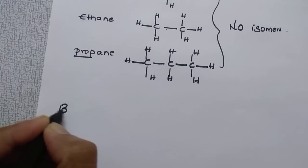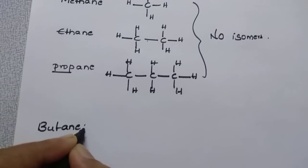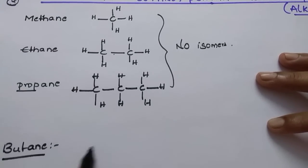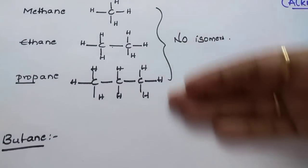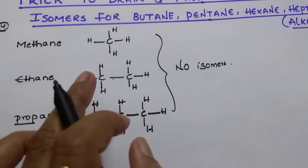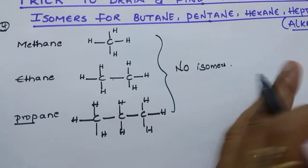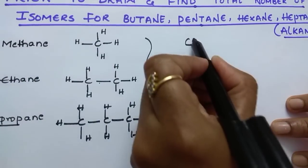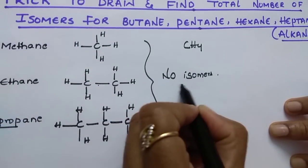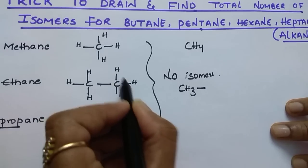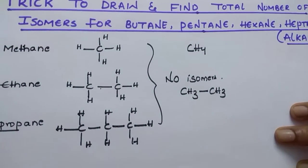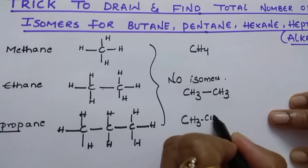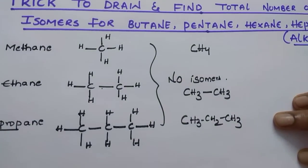Let us see butane. Butane has 4 carbons. Write 4 carbons in the same way and place hydrogens. But every time writing like this consumes a lot of time, so I will teach you an easier way to write. These formulas are called structural formulas. Let us see the condensed formula: carbon with 4 hydrogens — CH4. For ethane: CH3 bonded to CH3. For propane: CH3-CH2-CH3. This is the condensed formula.